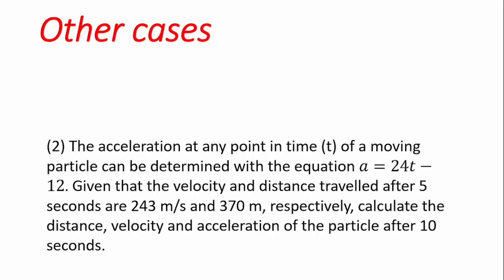For the case where acceleration is given, we integrate once to get the velocity equation — using v = 243 m/s at t = 5 seconds to find the constant of integration. Integrating again gives the displacement equation — using x = 370 m at t = 5 seconds to find the second constant of integration. Then substituting t = 10 into both equations gives the final answers.